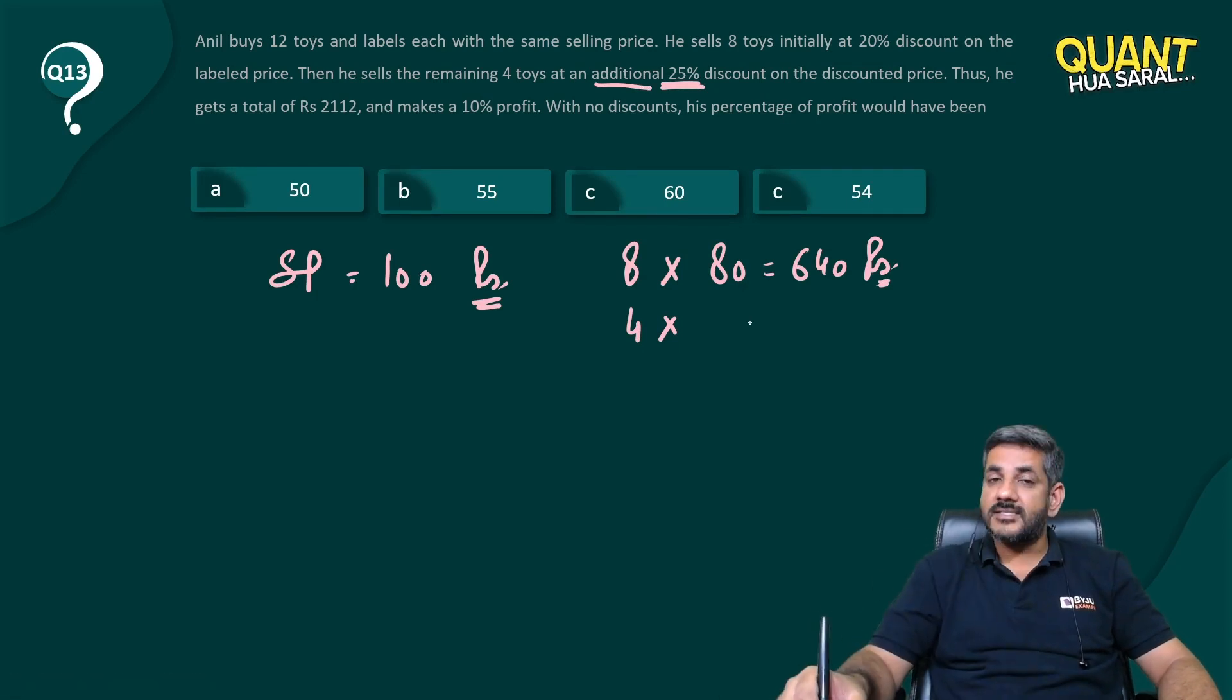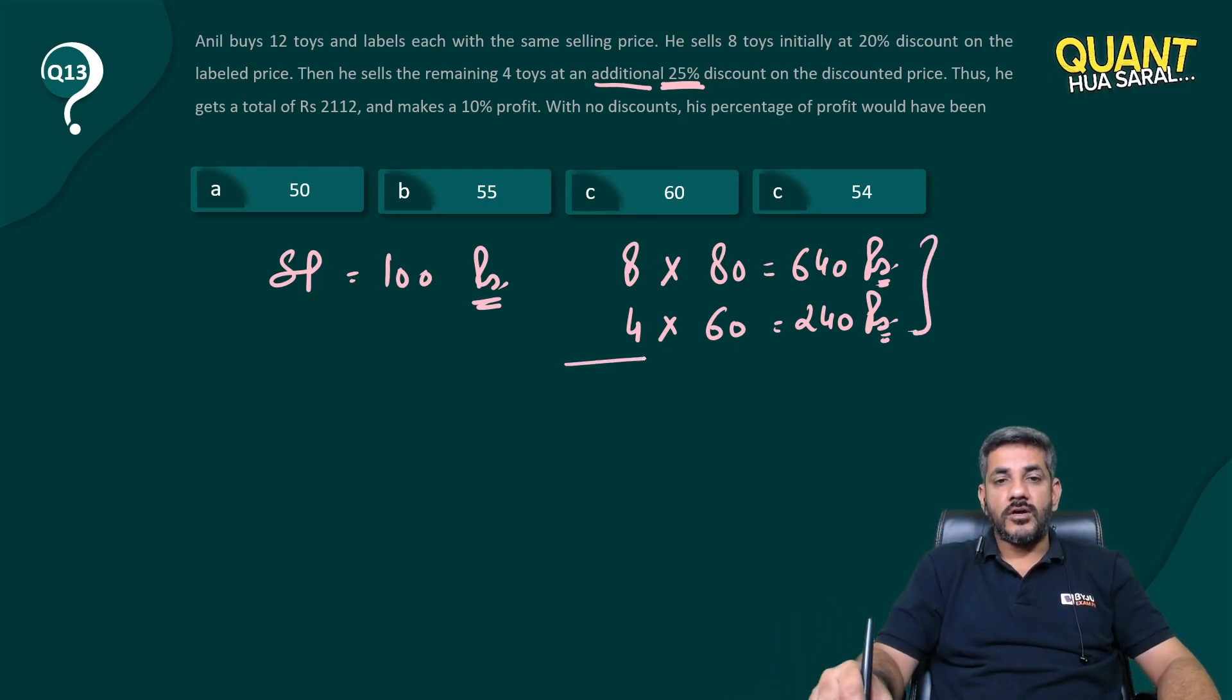20% discount, that makes it 80. Another 25% of 80 makes the price 60, so they are sold for Rs. 240. Ultimately, all 12 toys are sold for Rs. 880.